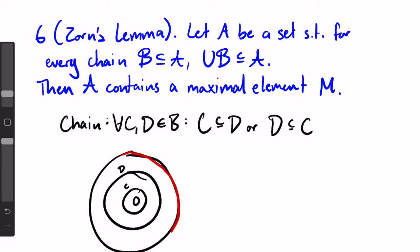Then Zorn's Lemma says, the union of b is in a. Since all of the sets in b are nested inside one another, the union of b is simply this outer ring, the maximal element of b.